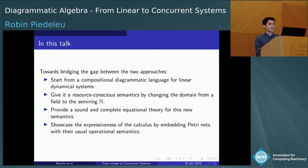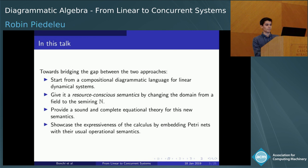The way we're going to do this is by recycling a simple but very versatile diagrammatic language that has been used to model linear dynamical systems, but not only. A very similar graphical language has been used profitably for quantum computation, for instance. And we're going to give it a different semantics that we call the resource conscious semantics, where concurrent patterns of interaction emerge.